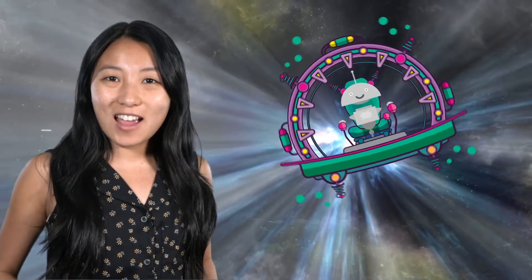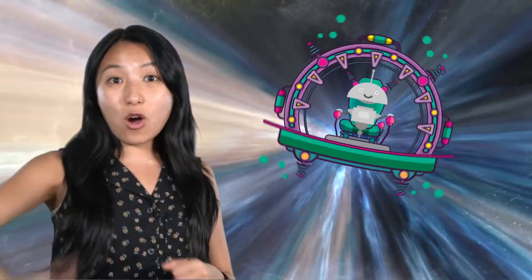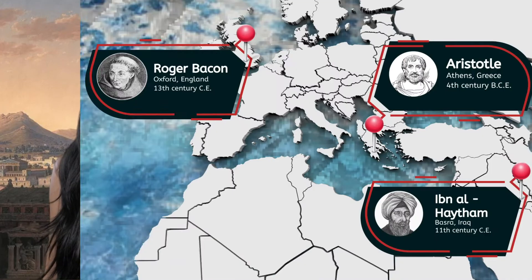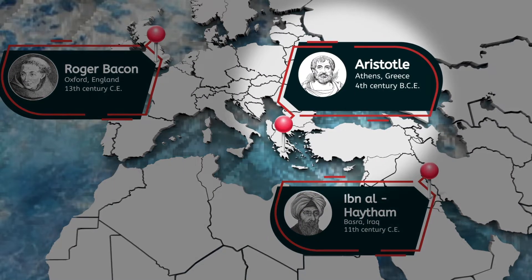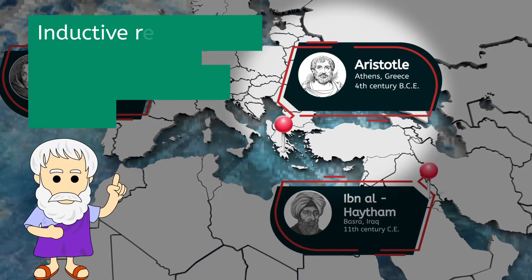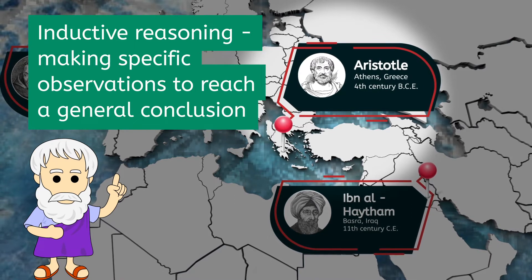To tell the full story of the scientific method, we have to go back to ancient Greece in the 4th century BCE. There, the philosopher Aristotle advocated the use of inductive reasoning — making specific observations to reach a general conclusion. Aristotle planted the early seeds of the scientific method.